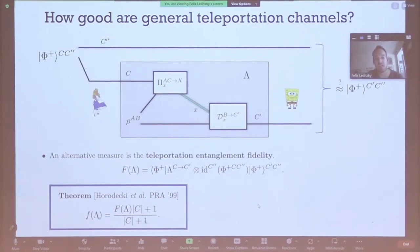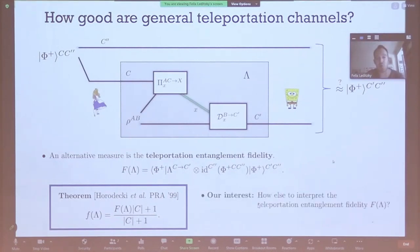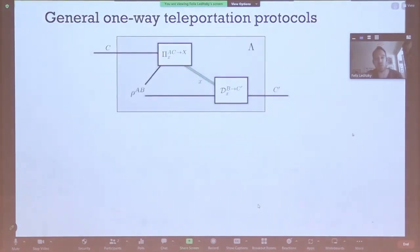These two figures of merit are related — one of the nice results Horodeckis showed in this late 90s paper. There's a nice formula connecting the average fidelity (lowercase f) with the entanglement fidelity (uppercase F), involving the dimension C of the system you aim to teleport from Alice to Bob. Our work tries to address how else we can interpret this entanglement fidelity F of lambda, by generalizing a known relation from port-based teleportation protocols that frames this fidelity in terms of a state discrimination problem.